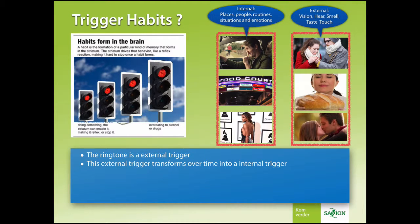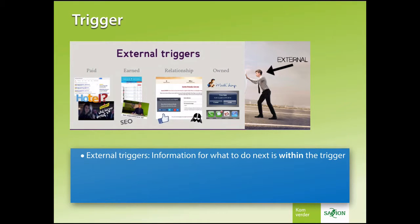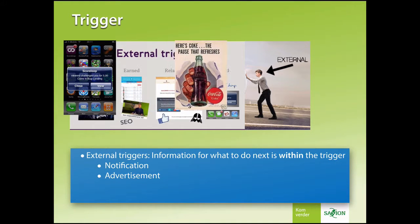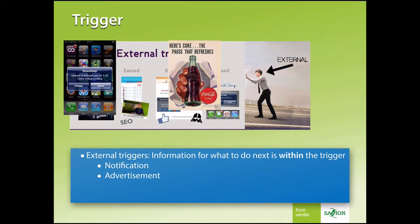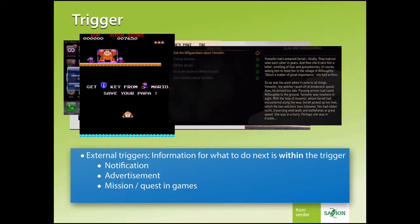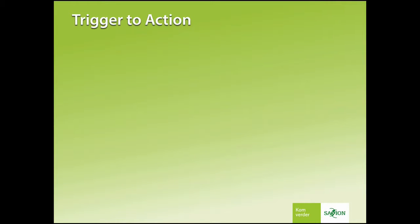In games, we experience a lot of external triggers. Information about what we have to do is clearly visible within the trigger. Take a look at notifications on your phone or advertisements — they tell you exactly what you have to do. In games, the trigger is usually goal or mission based. So in Donkey Kong, we have to get the key from Mario to save Papa. And in The Witcher 3, we have to ask the Nilfgaardians about Yennefer. The trigger tells us what to do — now it's up to us to undertake action.